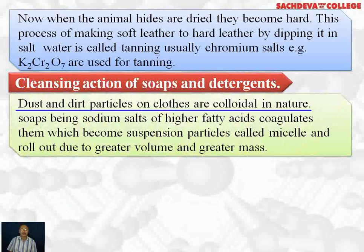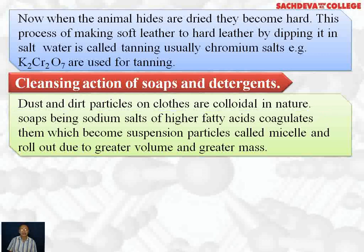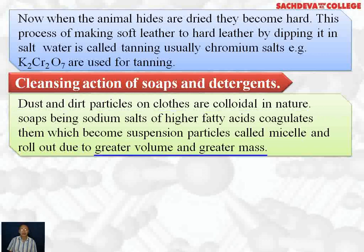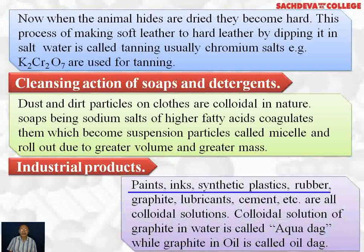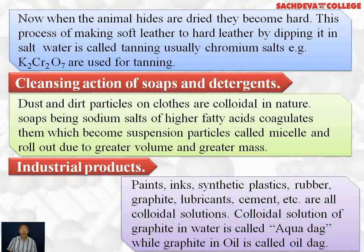Usually chromium salts, for example K₂Cr₂O₇, are used for tanning. Cleansing action of soaps and detergents: dust and dirt particles on clothes are colloidal in nature. Soaps, being sodium salts of higher fatty acids, coagulate them, which become suspension particles called micelles and roll out. Industrial products such as paints, ink, synthetic plastics, rubber, graphite lubricants, and cement are all colloidal solutions. Colloidal solution of graphite in water is called aqua dag, while graphite in oil is called oil dag.